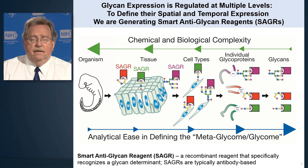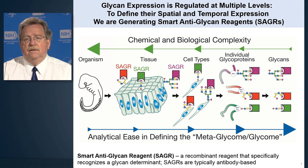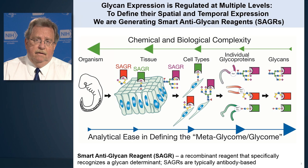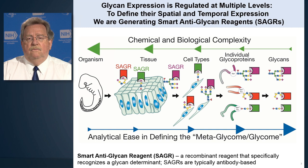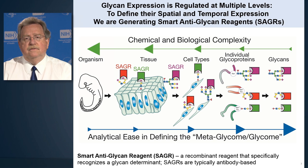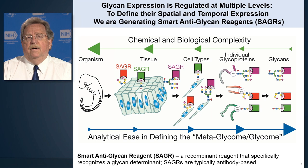From an embryo we develop into a full-fledged adult, and throughout development of the human being and any animal, there are changes in the glycans that occur. So what we talk about is the spatial and temporal expression — that is, where they're expressed and when they're expressed — of all these thousands of glycans on thousands of glycoproteins in many human cell types.